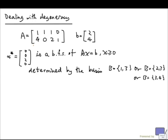Say this is my matrix A — it's a 2 by 4 matrix with full row rank. B is this vector here. It's not difficult to see that x star equal to 0, 0, 2, 0 is a solution to Ax equal to b, x greater than 0, and in fact it is a basic feasible solution determined by any one of these three bases: {1,3}, {2,3}, or {3,4}.